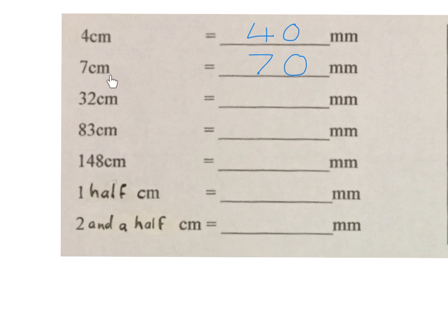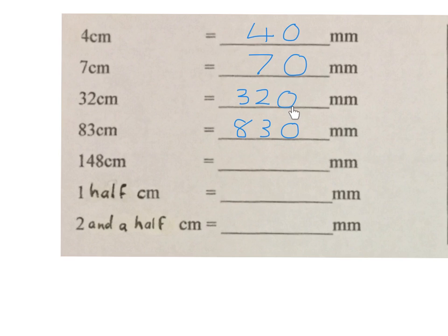For 7 centimeters, do we have centimeters? Yes — for every one centimeter we have 10 millimeters, so the answer is 70. I try to stay away from saying 'times 10' or 'times 100' — get a feeling for it instead. The next one is 32 centimeters. Do I have centimeters? Yes — for every centimeter I have 10 millimeters. Then 148 centimeters — do we have centimeters? Yes, and for every one we have 10 millimeters, so I write the answer.